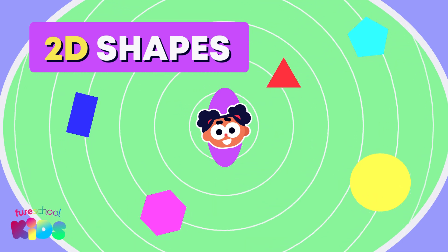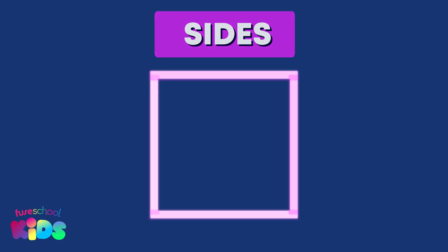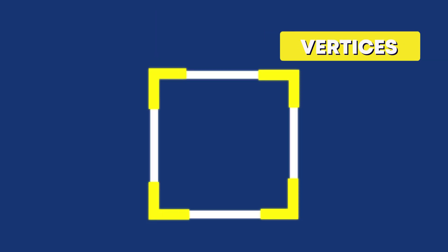Do you remember the names of these shapes? We give 2D shapes different names based on how many sides and vertices they have. Vertices are corners.